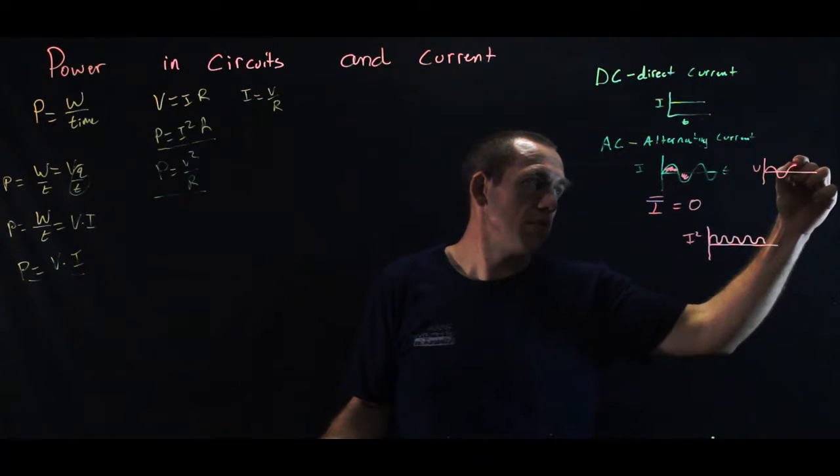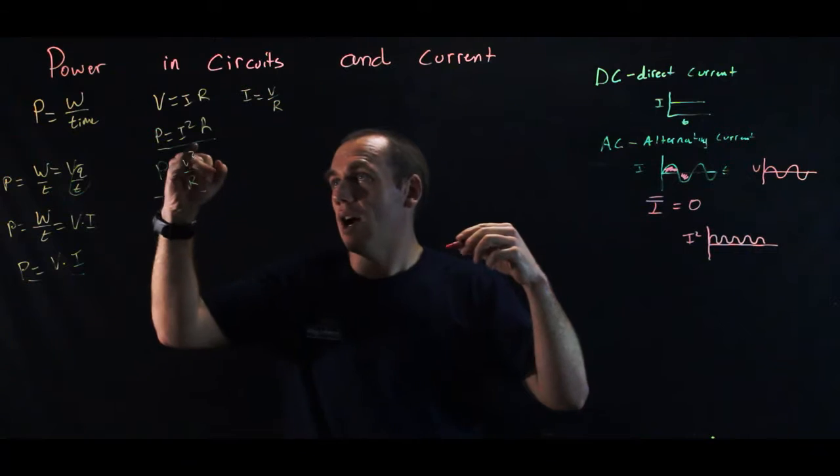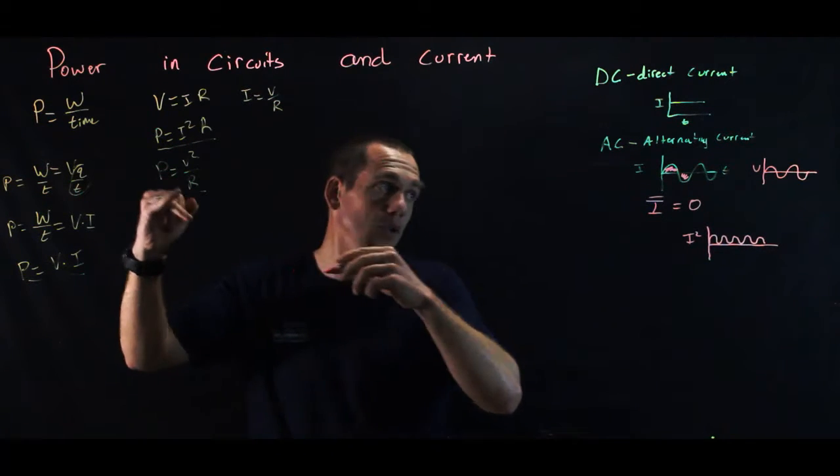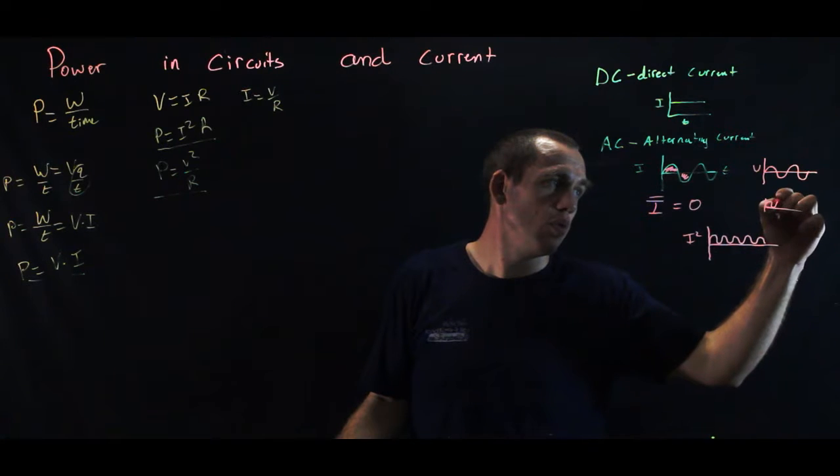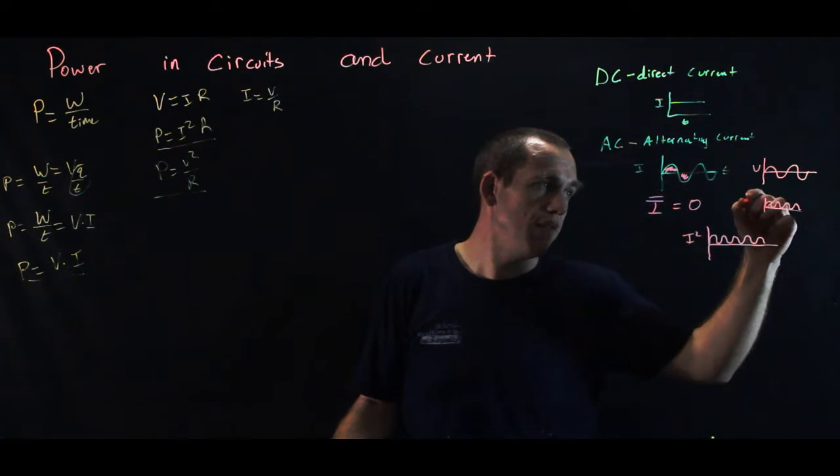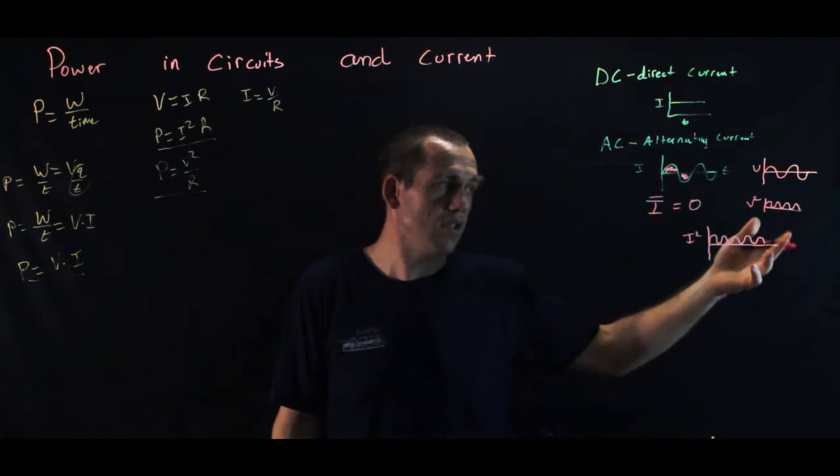So not only is our current alternating back and forth, but our voltage alternates back and forth. And just like I squared in the power equation, voltage is squared. So when we look at the square of voltage, it also will never go negative, the V squared will always alternate between zero and one.